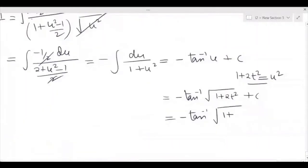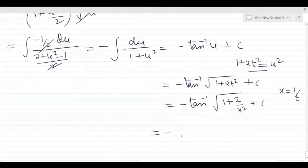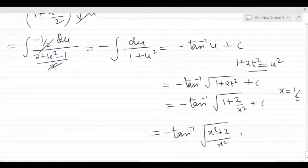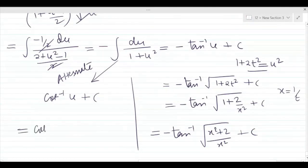Substituting back, the final answer is minus tan⁻¹(√(x² + 2) / x) + C. Alternatively, since the derivative of cot⁻¹(u) is minus 1/(1 + u²), you can write cot⁻¹(√(x² + 2) / x) + C as an alternative form. These two answers are both valid.